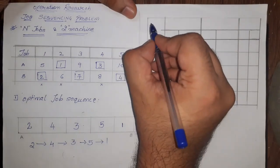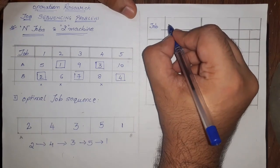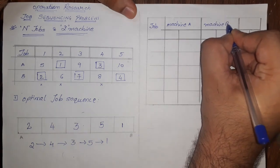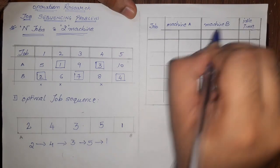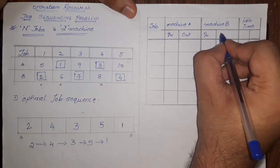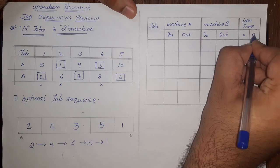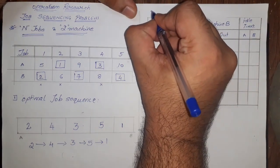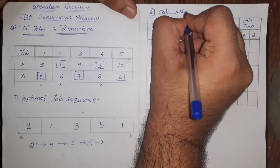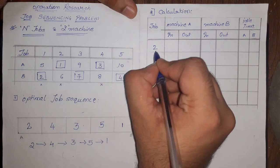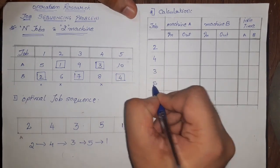Now let's see the format for calculating idle time and elapsed time. The table we need to create has a first column for jobs. Since there are two machines, we'll have machine A and machine B columns, and we'll also have an idle time column. For machine A we need to find the in time and out time; similarly for machine B we find the in time, out time, and idle time. We note down the optimal job sequence: job two, four, three, five, and one.